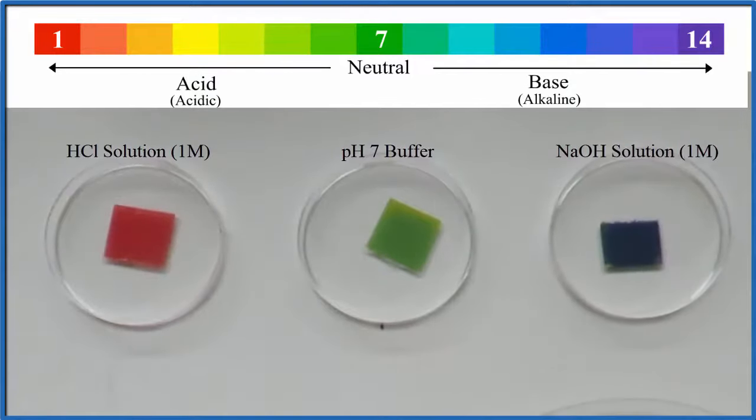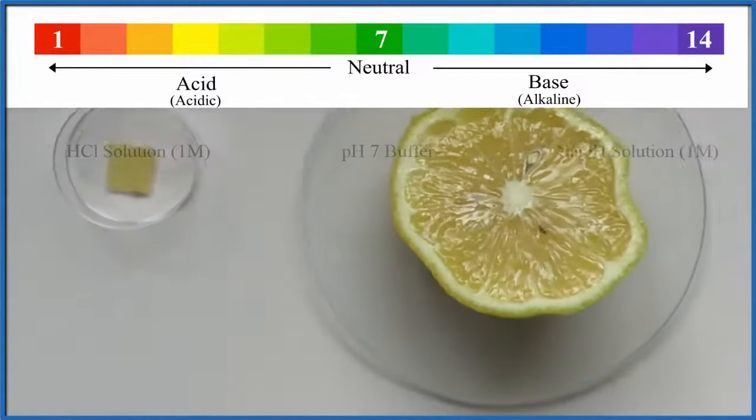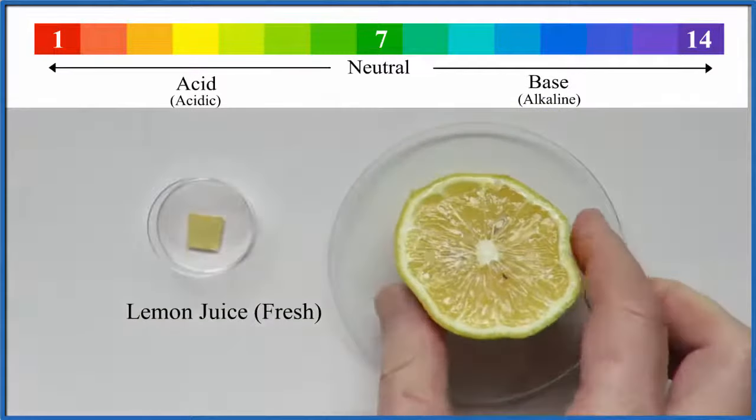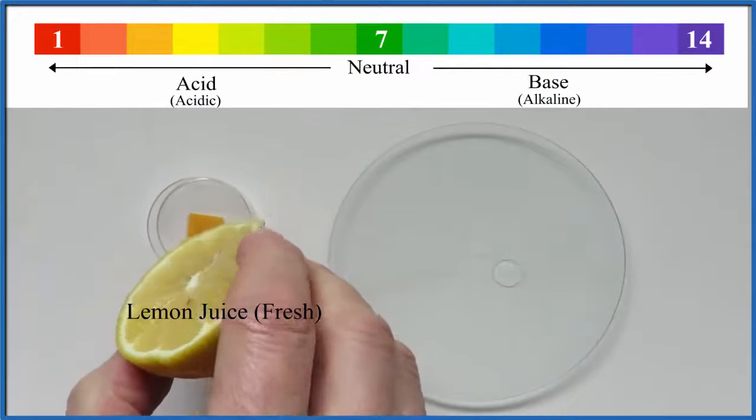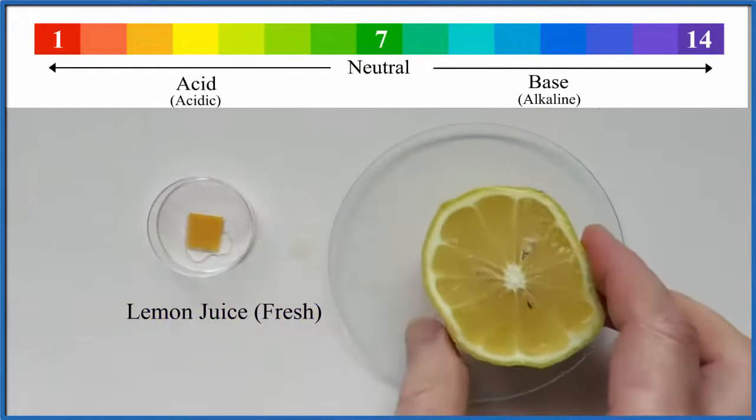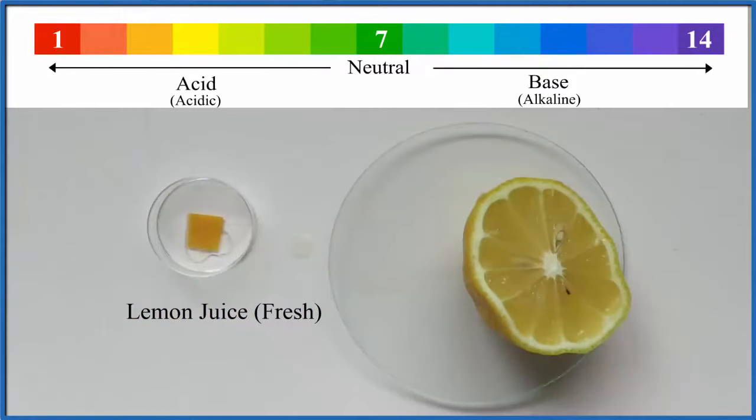So our pH paper is working as expected. Now let's test lemon juice. So we have a fresh piece of dry pH paper, we drop that lemon juice on it and you see that we get that orange color. If we compare that to our scale that orange color, that's a pH of 3.